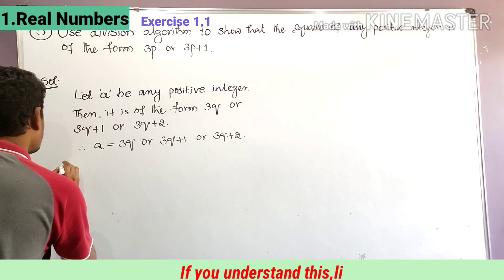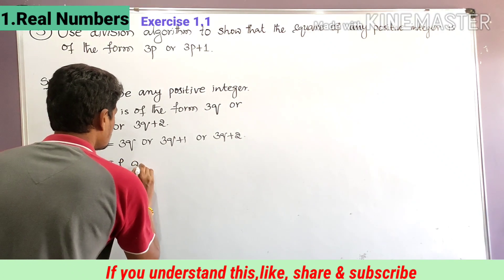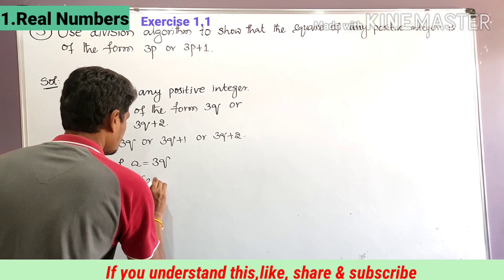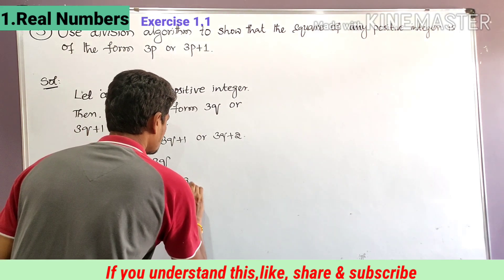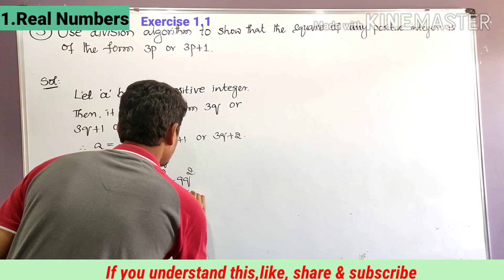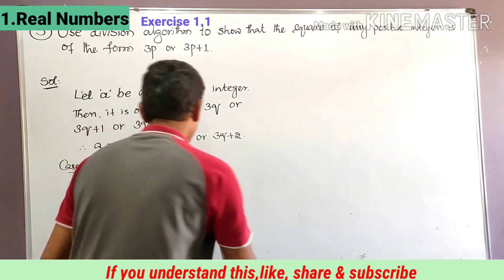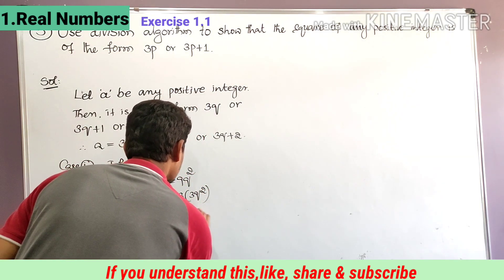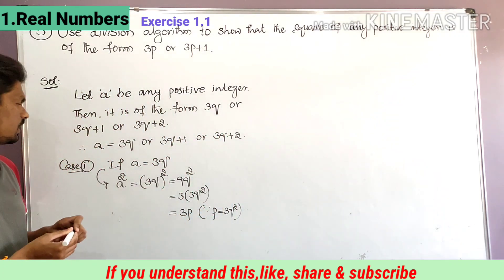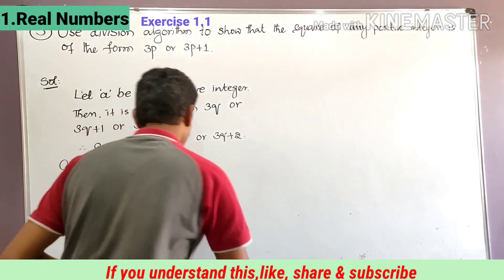Case 1: If a is equal to 3q, by squaring on both sides, we get a squared equal to 3q whole square, that is 9q squared. Taking 3 as common, we can write 3 into 3q squared. Let p equal to 3q squared, then it becomes 3p. So if a is equal to 3q, then a squared is of the form 3p. Let this be equation number 1.